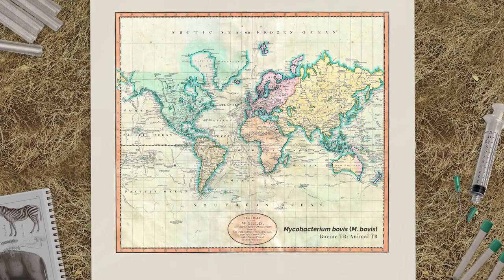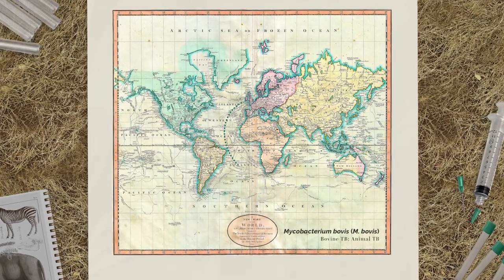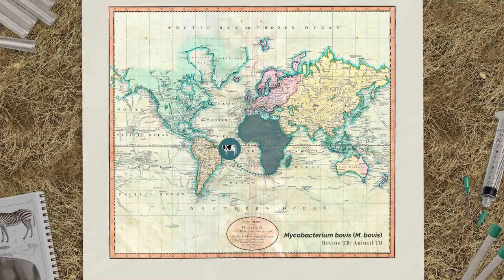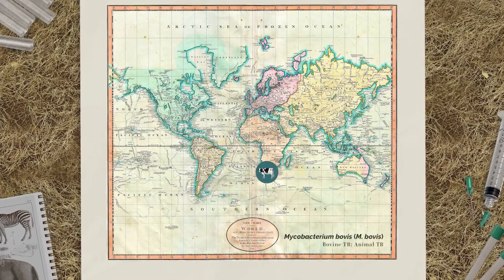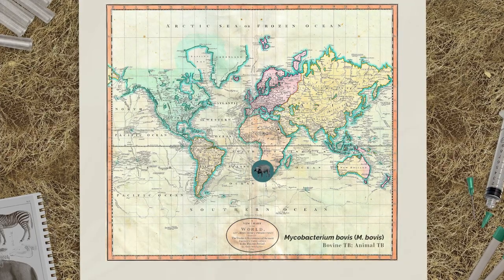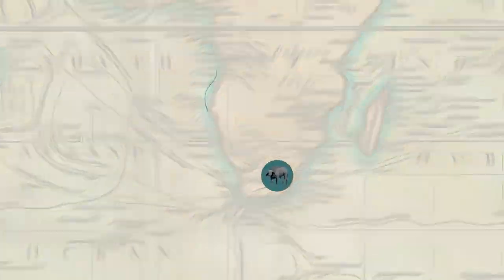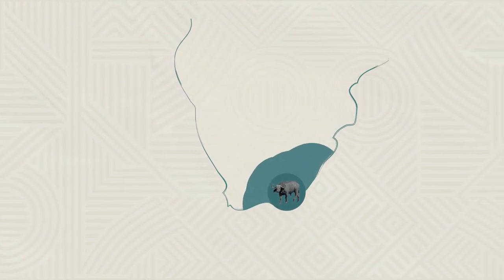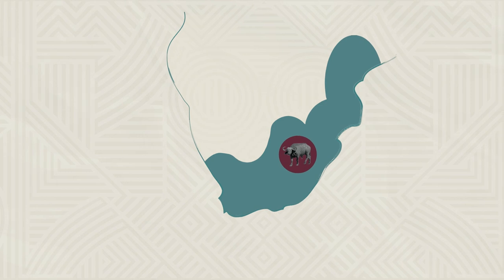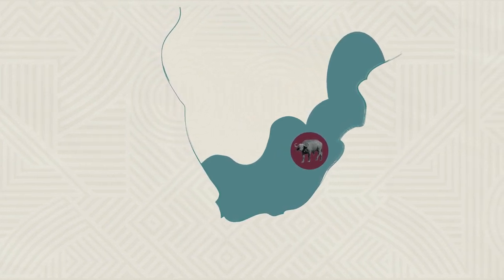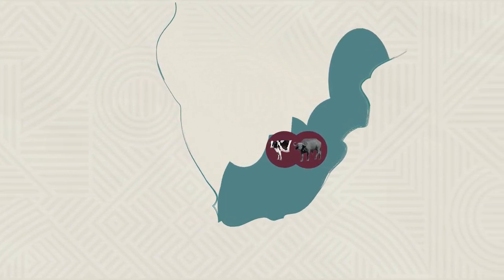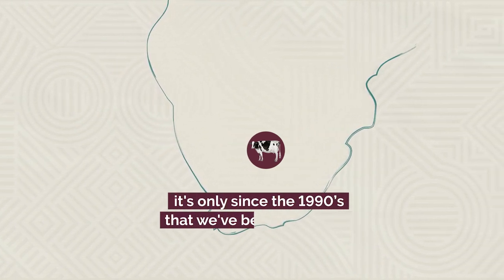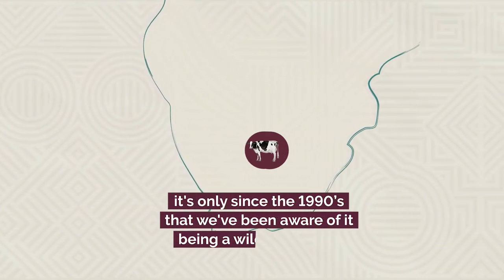Bovine TB came from Europe with the first European settlers. We believe that cattle imported to this continent had bovine TB and intermingled with wildlife like buffalo. It then spread to wildlife locally in the Eastern Cape, became established, and spread from there. Primarily it's been a disease of domestic cattle, and it's only since the 1990s that we've been really aware of it being a wildlife disease.